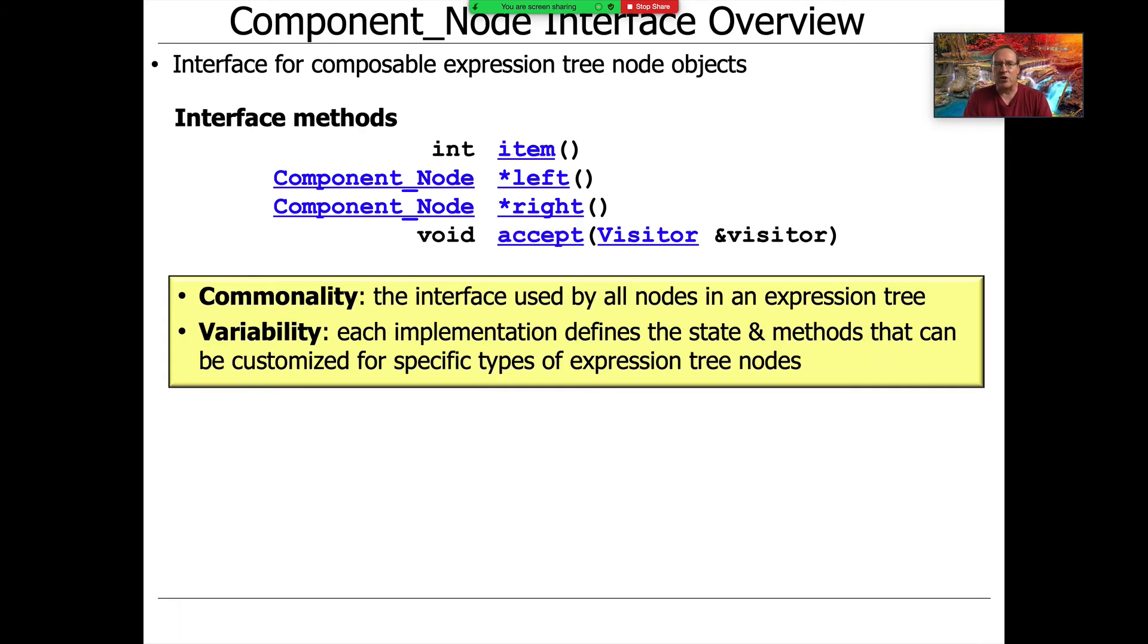So if you recall, I talked at length earlier about this concept of commonality and variability, where commonality is the API or the interface that's designed to be stable. And so in this case, we have a common API, item left, right, and accept. Variability comes from being able to subclass this abstract-based class and then fill in implementations of these various methods. And that's the wonderful aspect of commonality and variability that we'll talk about over and over again throughout these slides. So we try to come up with a common interface that's fixed, and then we make it possible to customize that interface to support different variabilities. And in this context, a variability would be different kinds of nodes, like a binary add node or a unary negate node or a leaf node. Those are examples of variabilities.